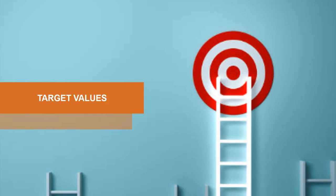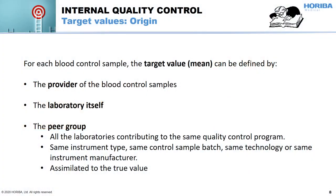These target values can have different origins. First, they can be delivered from the provider of the control samples. But it is also recommended for the laboratory to set its own target values and confidence ranges. The last possibility is that the target values come from the peer group, which corresponds to all laboratories using the same instrument and same technology — all similar laboratories which are part of the same quality control program.